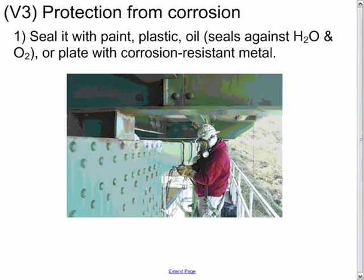How can one protect iron from this rusting? Well, the most common method shown in this picture is to seal it with paint that will protect the iron if it's a complete seal against any water or oxygen. Anything else that would seal it, sealing it in plastic, coating it in oil or another hydrophobic substance will seal it against water and oxygen. You could also plate it with a corrosion-resistant metal. And so anything that will seal it away will protect it against rusting.